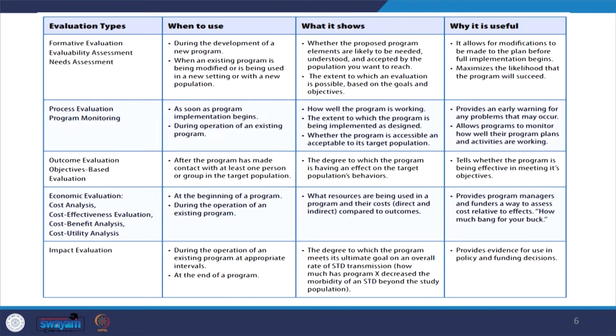Outcome evaluation or objective-based evaluation is useful after the program has made contact with at least one person or group in the target population. Once persons have been contacted for the treatment group, how these treatment groups are evaluated — whether the objective has been reached to the right person or not — is assessed. This tells whether the program is being effective in meeting its right objective, and the stakeholders can also be evaluated.